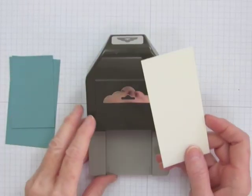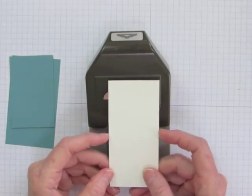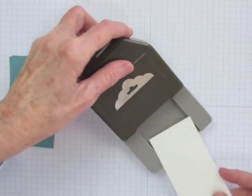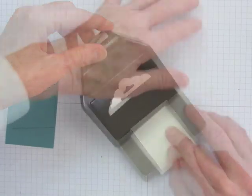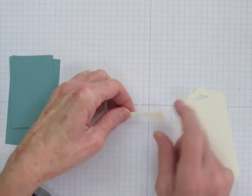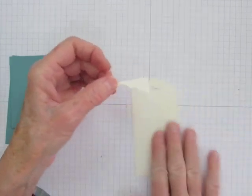I'll start with a scalloped top tag. Here's a piece of cardstock, two inches by four and a quarter. I'll go ahead and punch the top and that will remove about an eighth of an inch from the top of my tag.